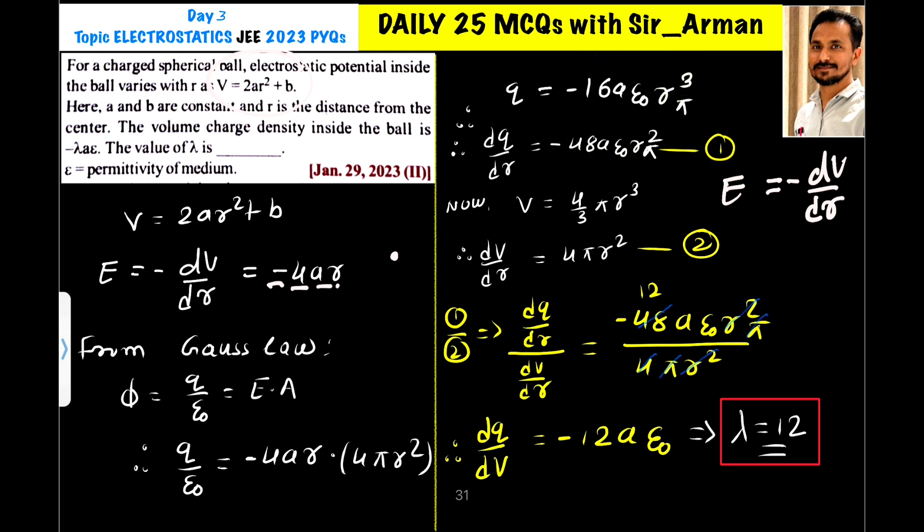Now, we know that volume is given by equation 4 by 3 πR³. Now, if you again differentiate this volume also, then this 3 will come down. So here it is 3 into 4 by 3 πR² differentiation, 3 and 3 will get cancelled, so it is 4πR².